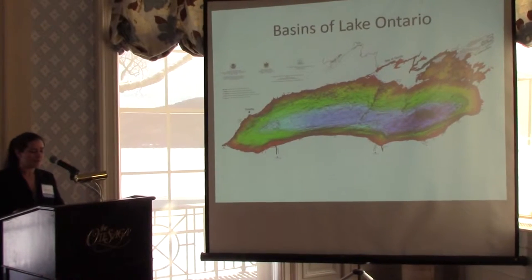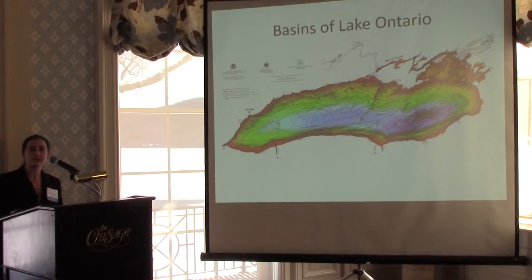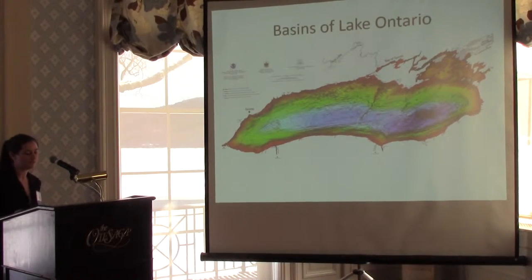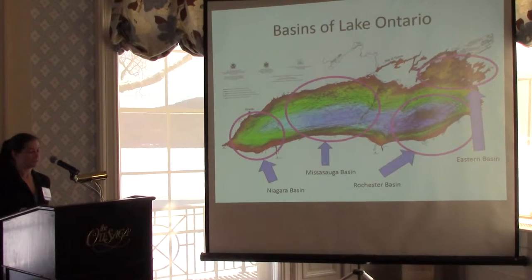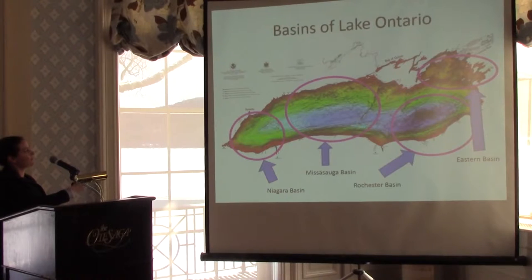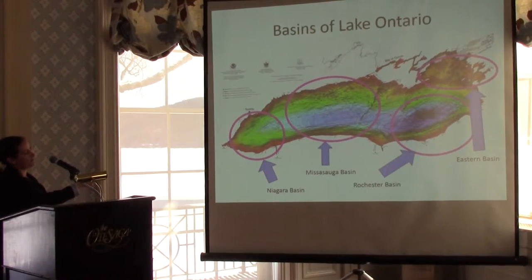Here's a quick overview of the basic bathymetry of Lake Ontario. Approximately 80% of the lake is deeper than 100 meters, with an average depth of 86 meters and a maximum depth of 245 meters. These numbers are greater than those of neighboring Lake Erie and Lake Huron, although the surface area of Ontario is the smallest of all the Great Lakes. Lake Ontario is divided into four primary basins: from west to east, these are the Niagara, the Mississauga — which is the biggest — Rochester, which is the deepest, and the eastern basin, which is the shallowest.